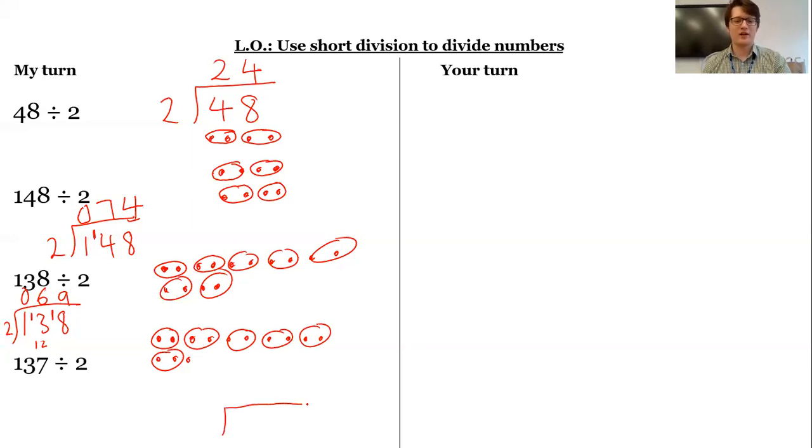What about this final example, though? 137 divided by two. So we already know two doesn't go into one. We've got to regroup that one. We've already seen two goes into 13 six times, leaving a remainder of one. But then we're left with this 17.